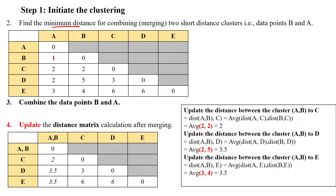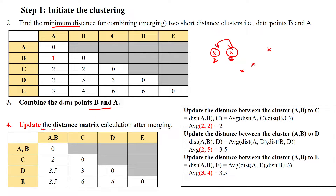The second step is to find the minimum distance between data points. The minimum distance is between a and b, so we merge these two data points. When merging a and b, we need to update the distance matrix.